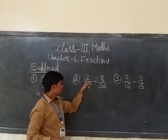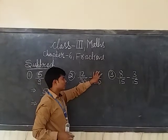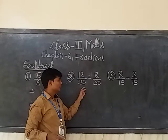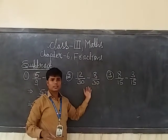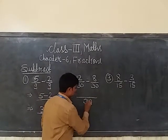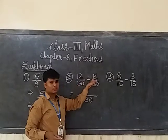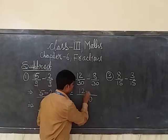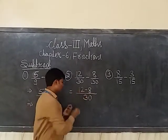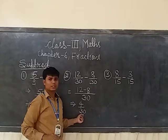The next question is 12 by 30 minus 8 by 30. It means that you have to subtract the fraction 8 by 30 from 12 by 30. Here also, the denominators are same. So first we have to write the denominator, and after that we have to subtract the numerators. 12 minus 8 — if we subtract 8 from 12, we get 4. So 4 by 30 is your answer.